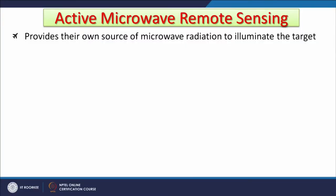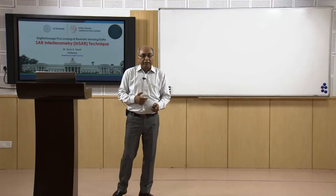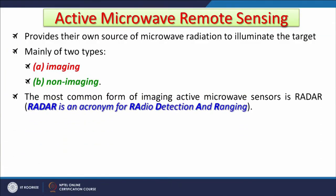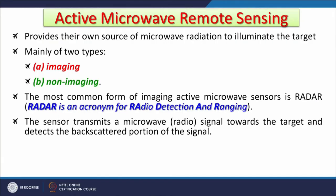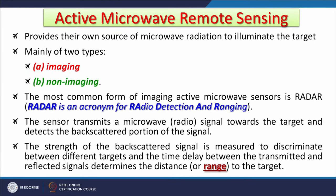Active microwave remote sensing provides its own source of microwave radiation to illuminate the target. It is mainly of two types: imaging and non-imaging. The most common form of imaging active microwave sensor is radar — which stands for Radio Detection And Ranging. It measures the time taken by signals to return to the sensor. The sensor transmits a microwave signal towards the target and detects the backscattered portion. The strength of the backscattered signal discriminates between different targets, and the time delay between transmitted and reflected signals determines the distance or range to the target.